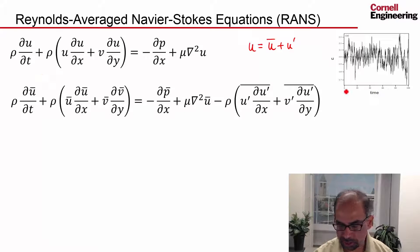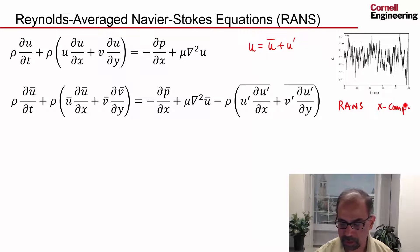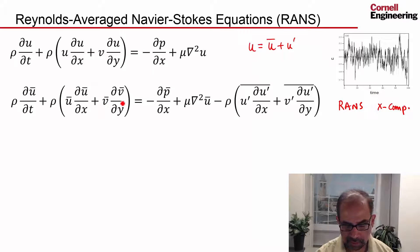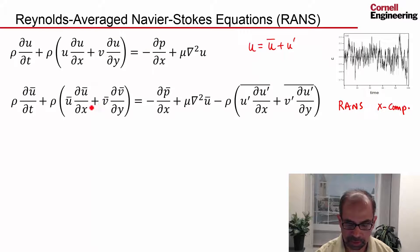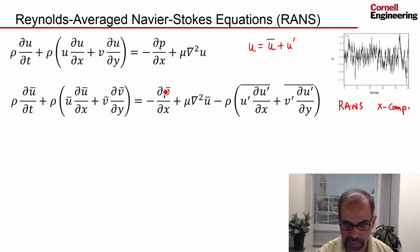This would be the x-component of the Reynolds averaged Navier-Stokes. This term is analogous to that term — the acceleration due to movement of the fluid particle, the so-called convective acceleration, is analogous to that. The pressure gradient term is analogous to that. The net viscous force, on average, is analogous to that.